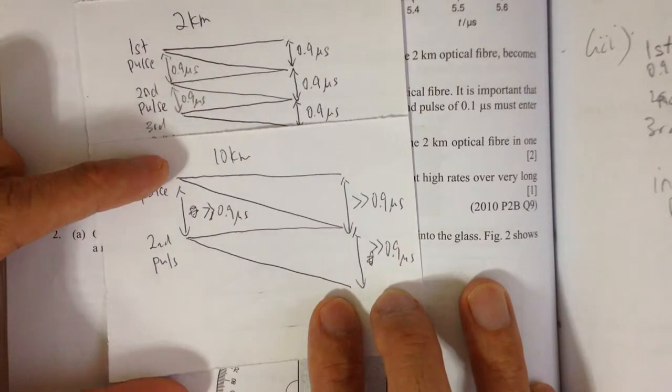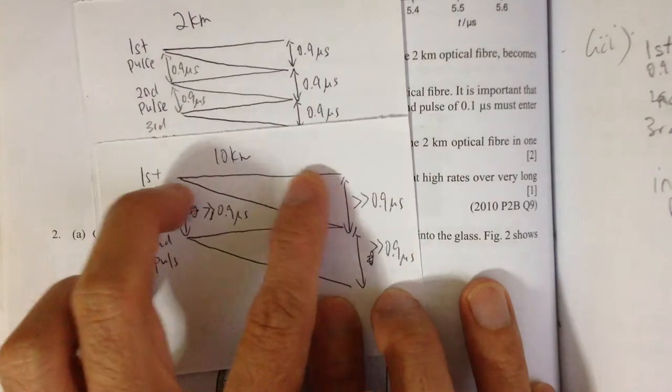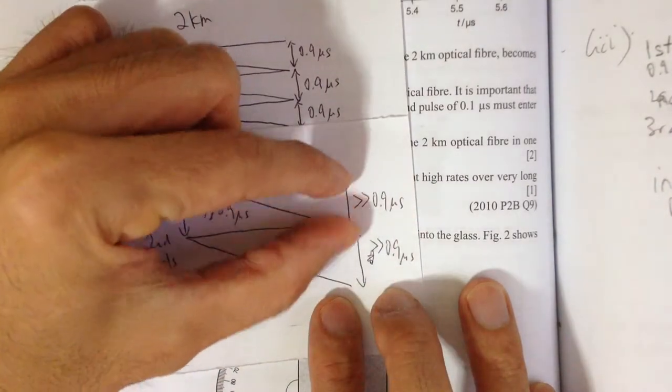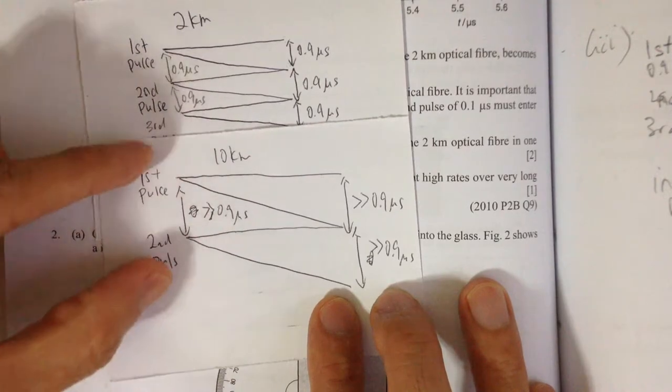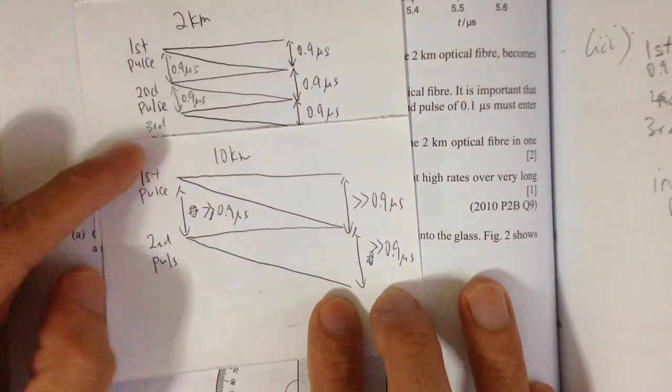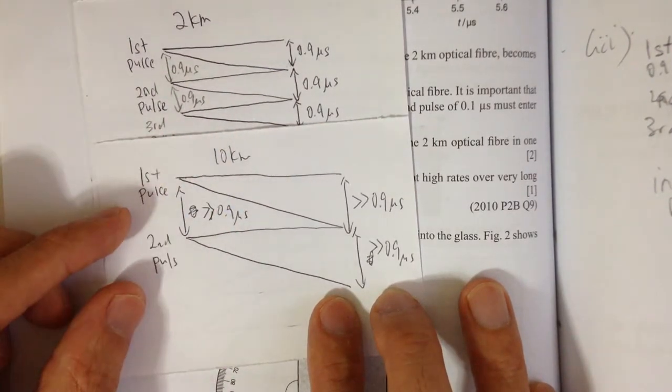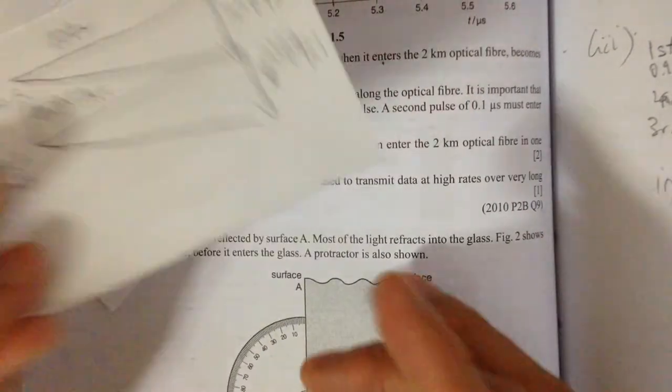So as the distance gets further, the spread gets wider, the less number of pulses you can put, and it becomes not high data rate instead, it becomes slow data rate.